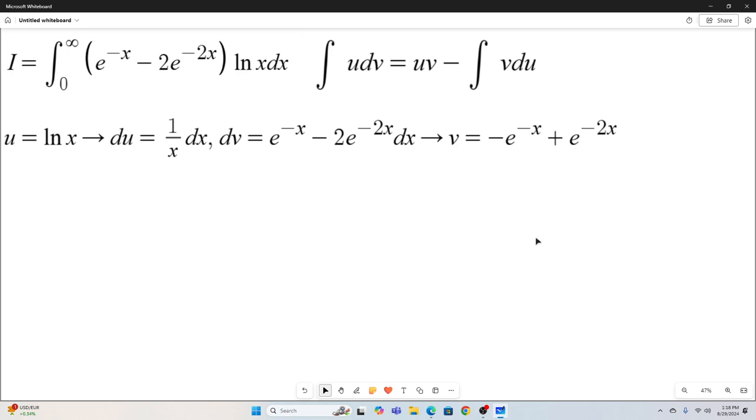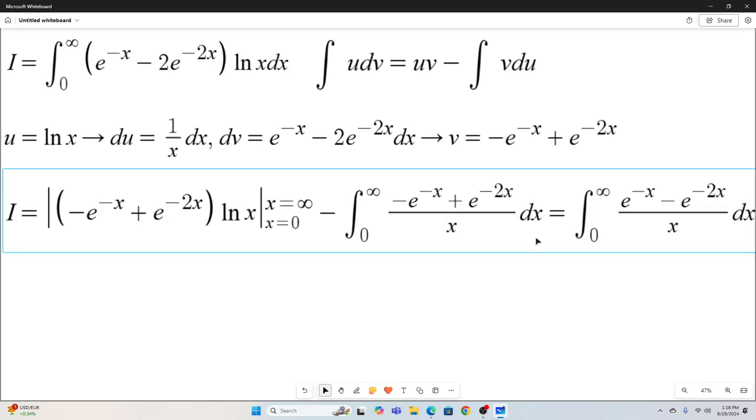All right, so we plug that into our formula. So our integral right there is equal to u times v evaluated from zero to infinity. That's right here minus the integral of v du, which is right here.